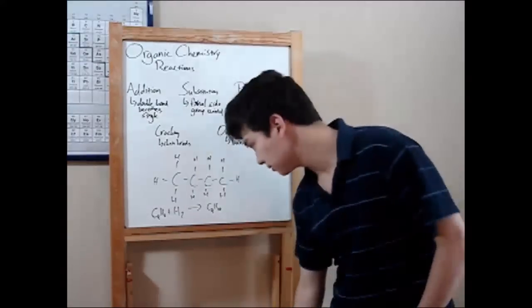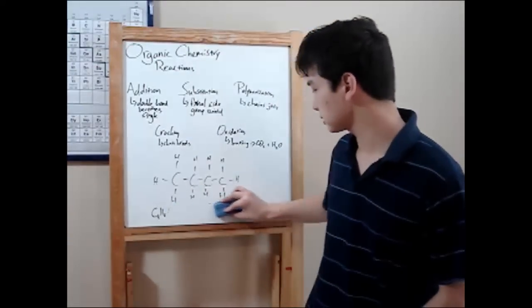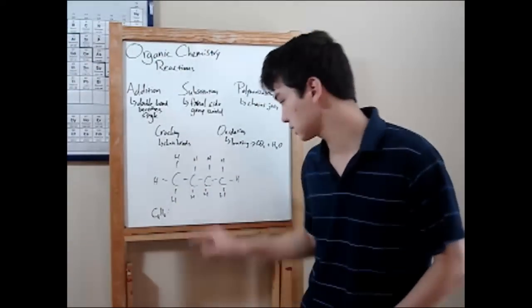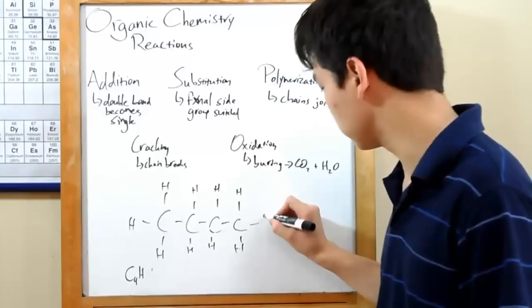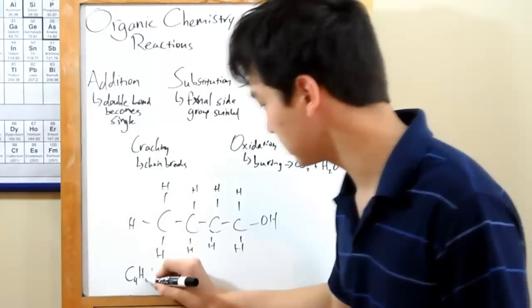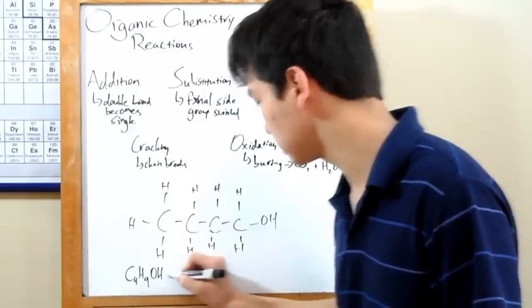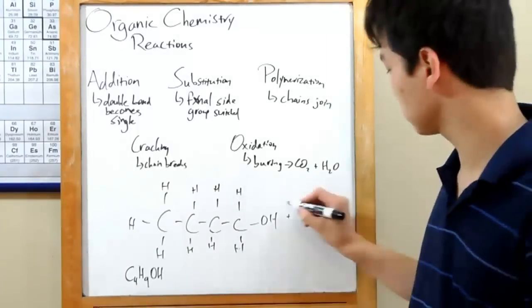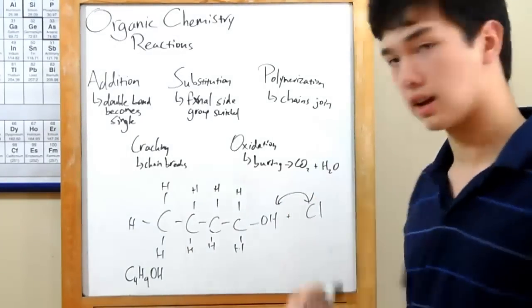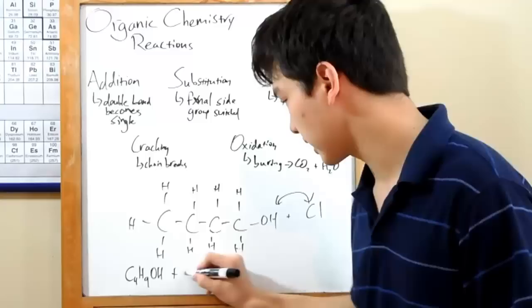Next is the substitution. That's when you have a functional side group, and it gets switched over for a different one. Let's change butane into butanol. You've got an OH here, C4H9OH. And if we bring in chlorine in a substitution reaction, the OH and the Cl will switch to create chlorobutane. So let's write that out.